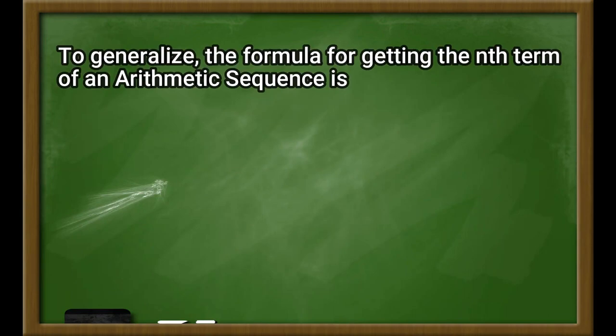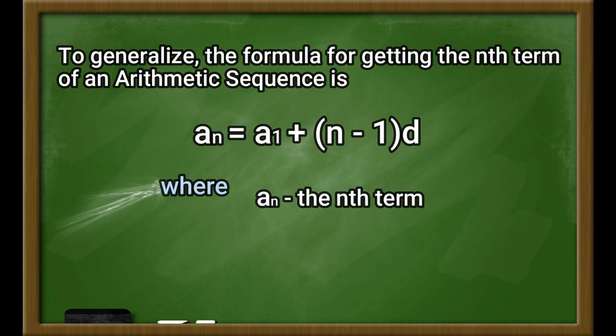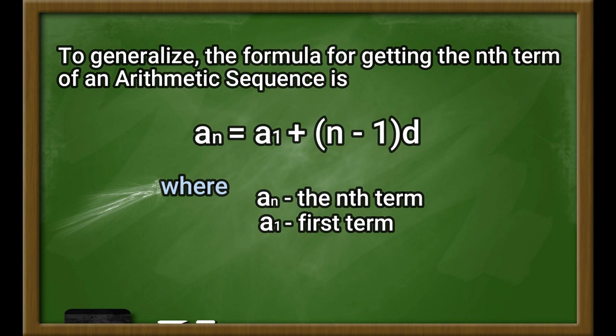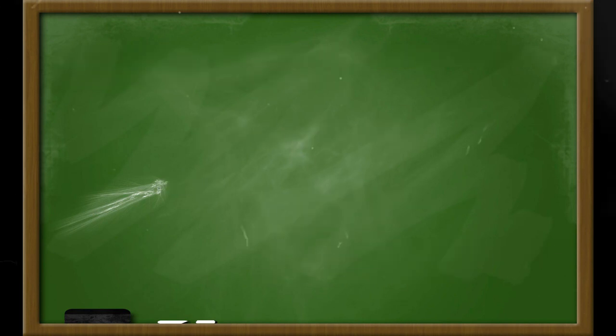To summarize what we have learned: the formula for getting the nth term of an arithmetic sequence is A sub n equals A sub 1 plus the quantity n minus 1 times d, where A sub n equals the nth term, A sub 1 is the first term, d is the common difference, and n is the number of terms. That ends our lesson. I hope you will be with us again soon. Happy learning!